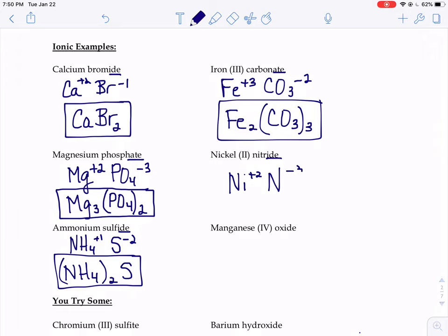Positive 2, negative 3. We would balance those out at 6 again. So we'd need 3 nickels, positive 6. Now I need a negative 6. 2 nitrides.